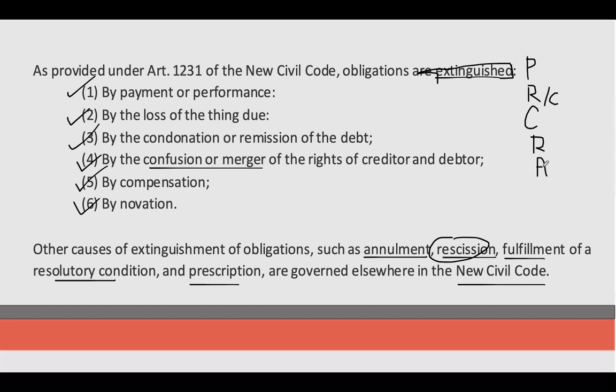PRC RAP — Letter R, A, P. Ano yung A? Annulment. After your prelim exam, we will be discussing a contract, and under loan contract, one of the defective contracts is an avoidable contract, which is a valid contract until it is annulled. Hanggat hindi pa pinapadeclare na void, then it will remain to be valid.